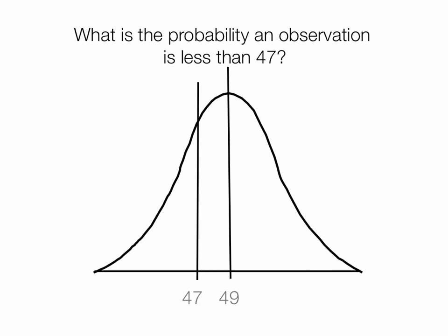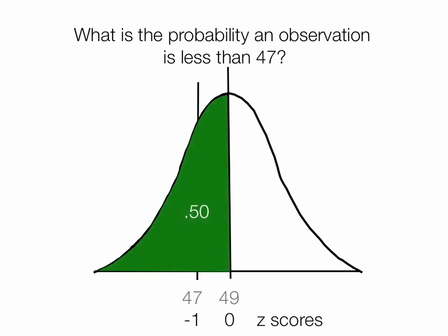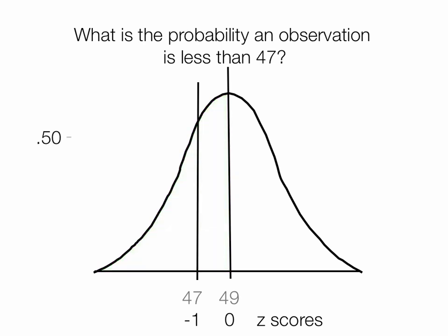What is the probability an observation is less than 47? Well, we know the whole left-hand side is 0.50. We know this area, this blue area here, is 0.34. So if we subtract 0.50 minus 0.34, we get 0.16, or that area 0.16 right there, the orange. So we can say the probability of an observation is less than 47, is about 16%.